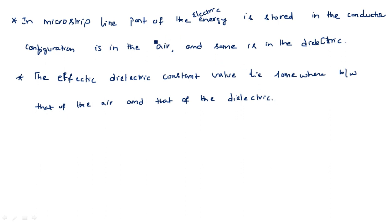In microstrip transmission lines, the electromagnetic energy traveling inside the line has part of its electric energy stored in the conductor — because a conducting copper strip line is there, and the bottom is also a conducting layer. The remaining part of the energy goes into the dielectric material.